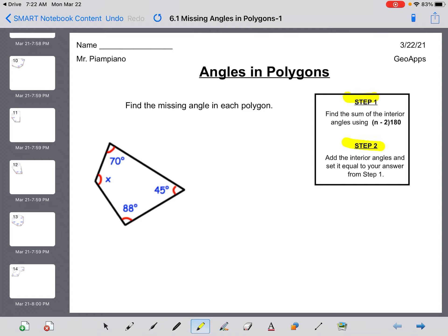I'm going to show you step one. Step one says find the sum of the interior angles using n minus 2 times 180. Well in this case, 1, 2, 3, 4, n is equal to 4. So here we have 4 minus 2 times 180. 4 minus 2 is 2, and 2 times 180 is 360 degrees. So all of these angles add up to 360.